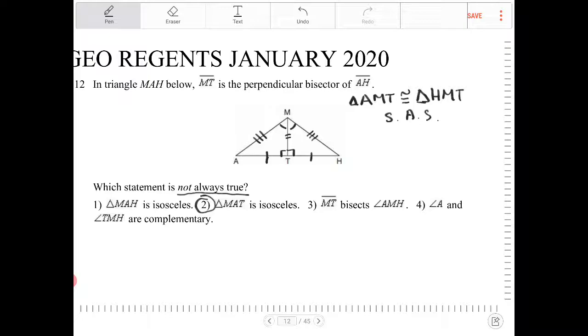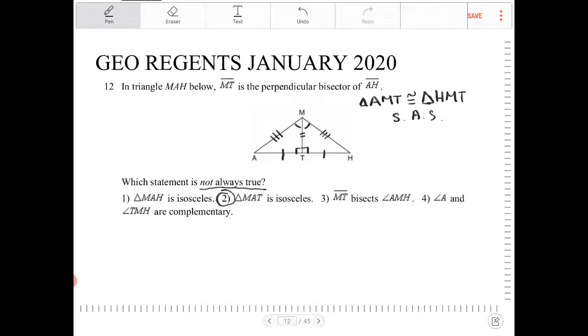Angle A and angle TMH are complementary. That is also a true statement because the third angle is 90 degrees. Therefore, all three angles must add up to 180. Angle A and angle TMH must be complementary.